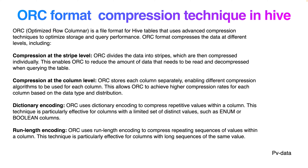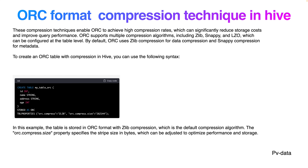Run-length encoding: ORC uses run-length encoding to compress repeating sequences of values within a column. This technique is particularly efficient for columns with long sequences of the same value. These are the four compression techniques ORC supports.